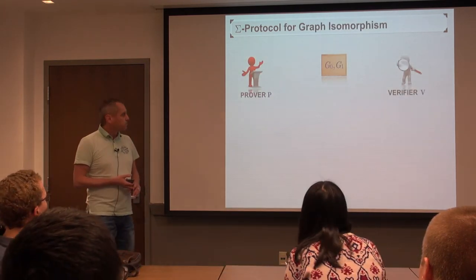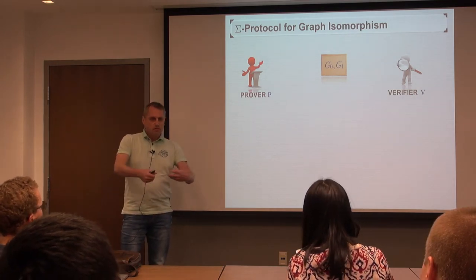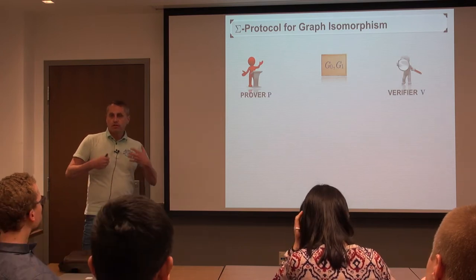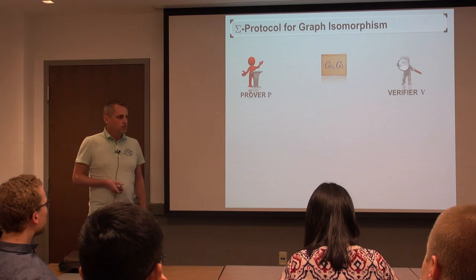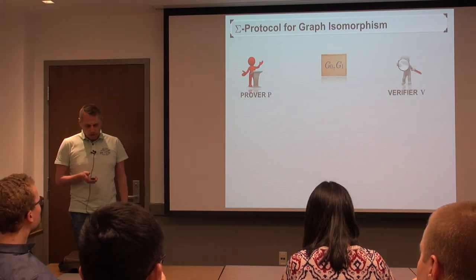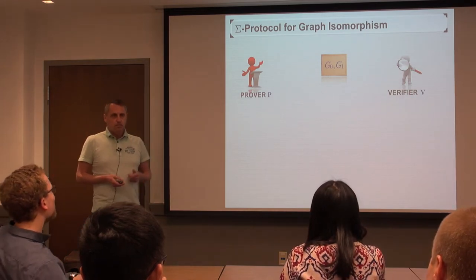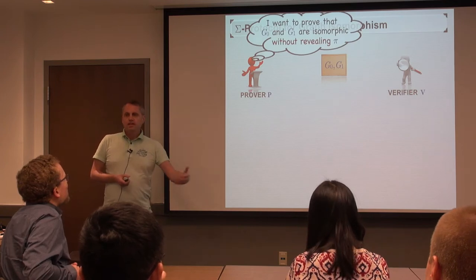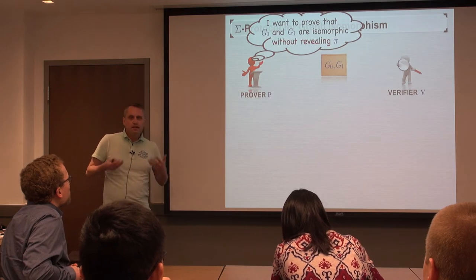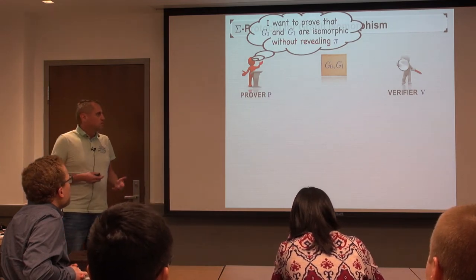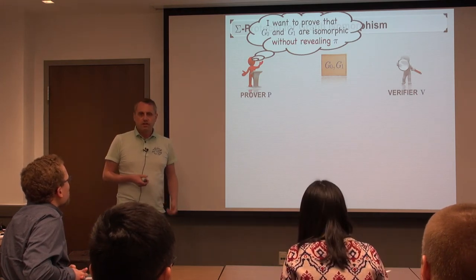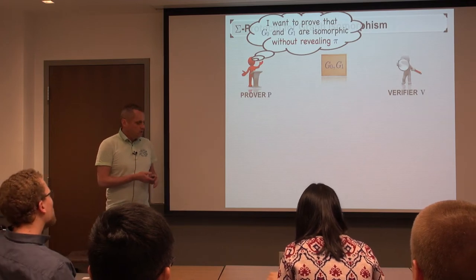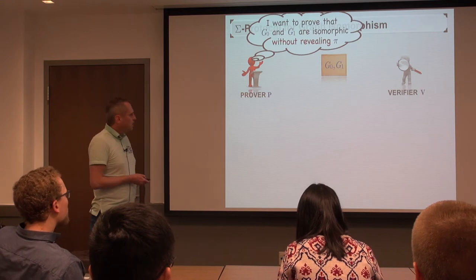Since this looks abstract if you see it for the first time, I'll give a concrete example — graph isomorphism — which you can hold on to in the remainder of the talk when I speak about general sigma protocols. This is a very well-known, classical, and elegant result. The situation is: two graphs are lying in front of you. One party, the prover, knows that these two graphs are isomorphic, knows the permutation that maps one onto the other, and wants to convince the verifier of this fact without revealing the permutation.